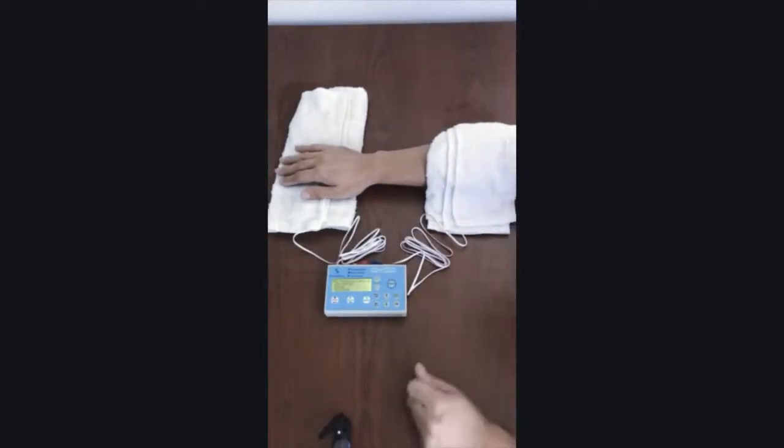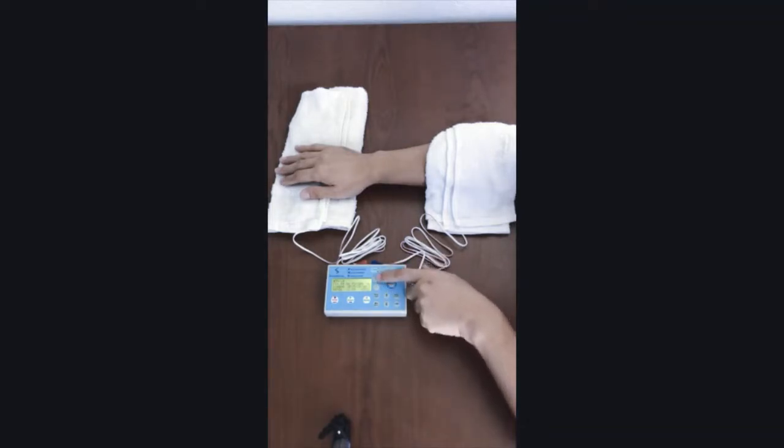To run a therapy protocol, just press the start key. The protocol will start to run and you can see the protocol running information on the screen. To change the output current intensity, press the plus key to increase the current intensity value or press the minus key to decrease the current intensity value.